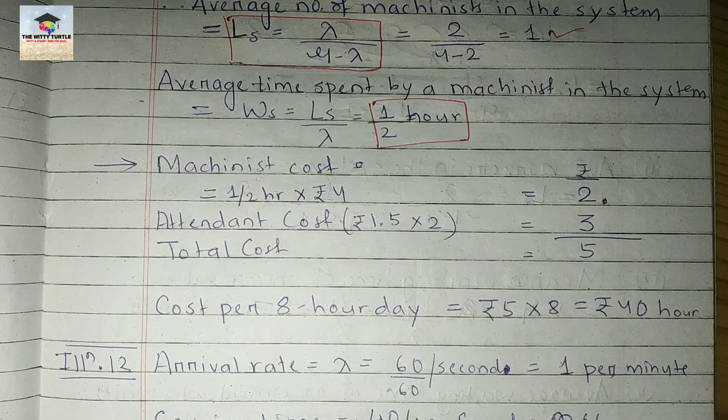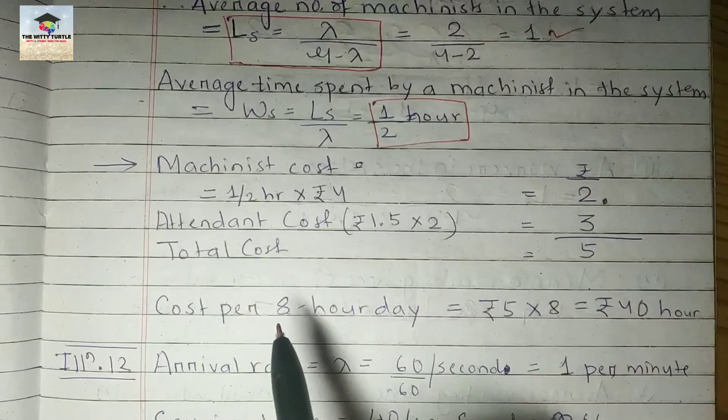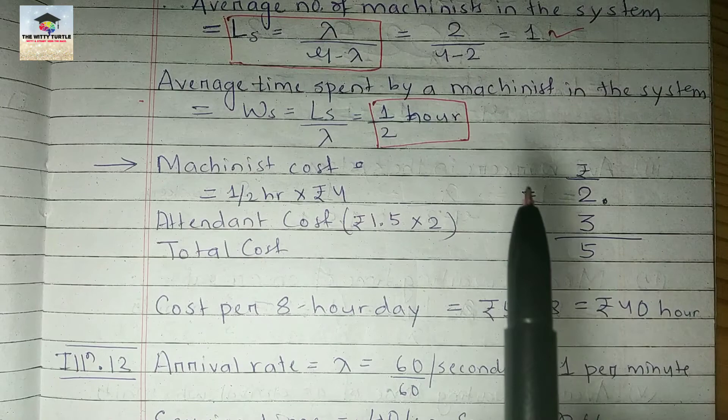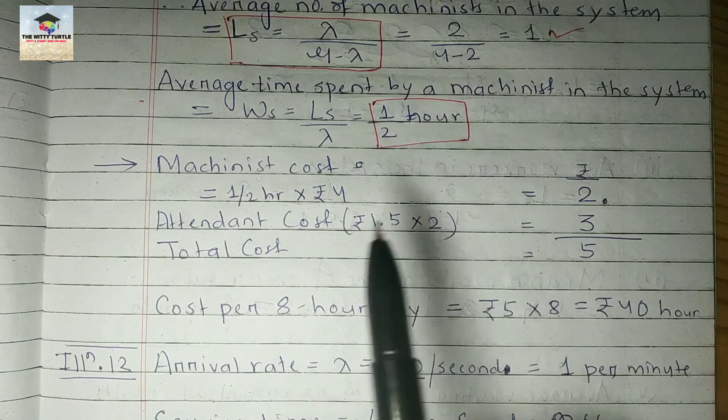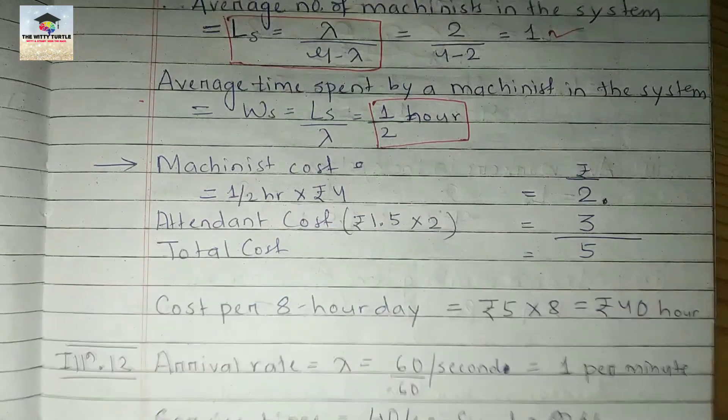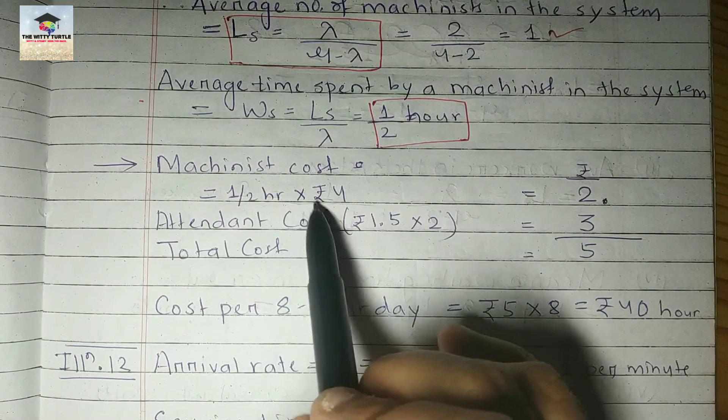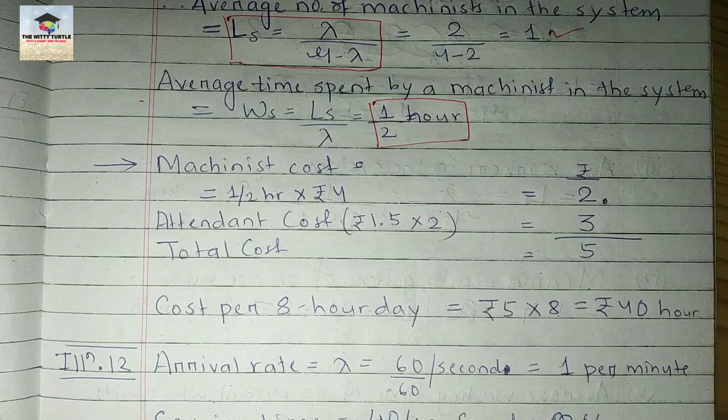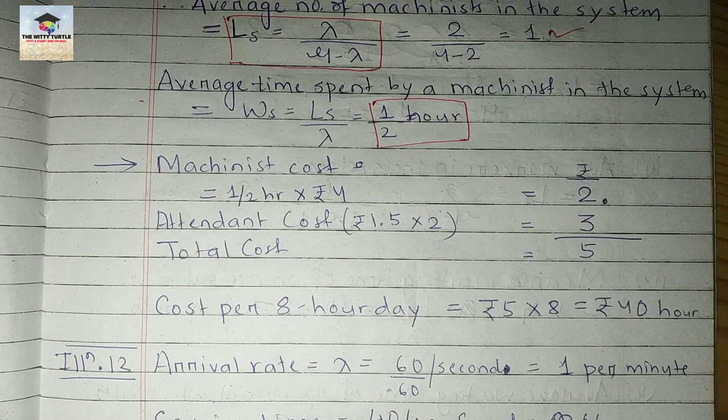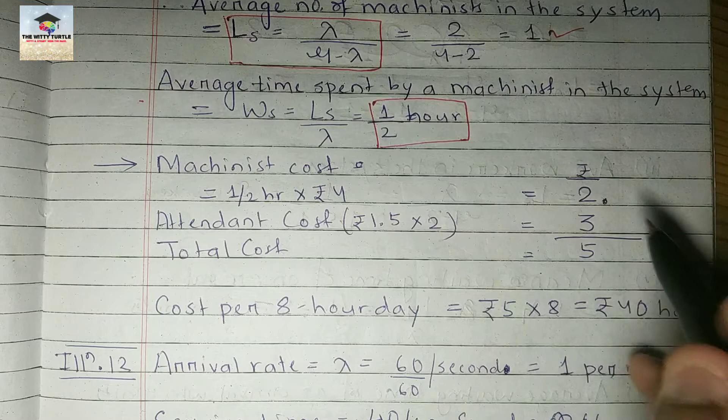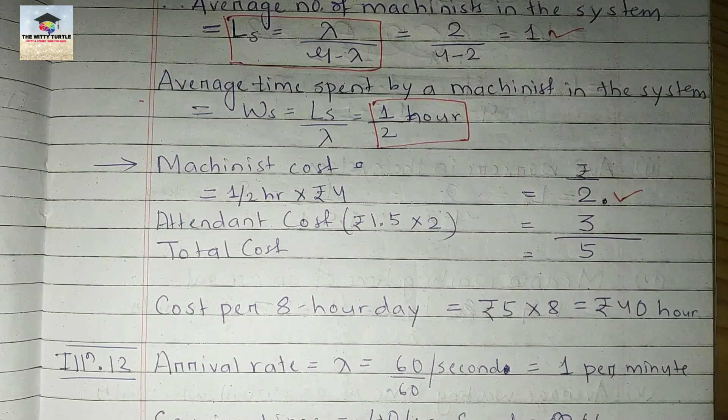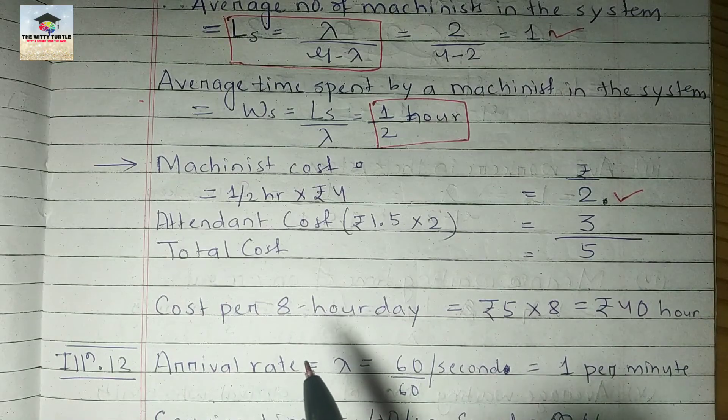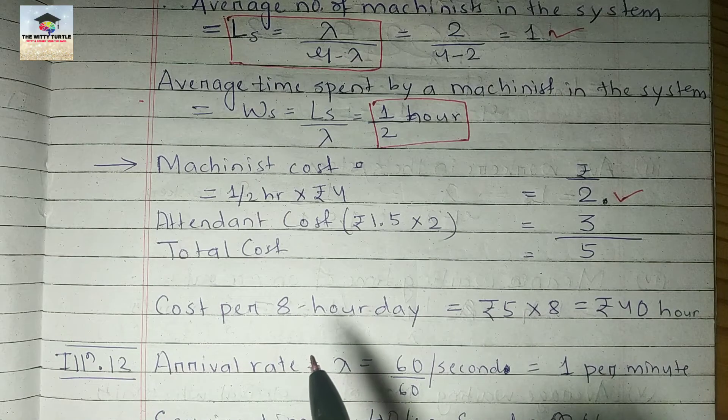The machinist cost is, because the average time spent by a machinist is 1 by 2 hours, that is 30 minutes, they will get half of the payment. So half an hour times rupees 4, because rupees 4 was for 1 hour, so they will get paid rupees 2.